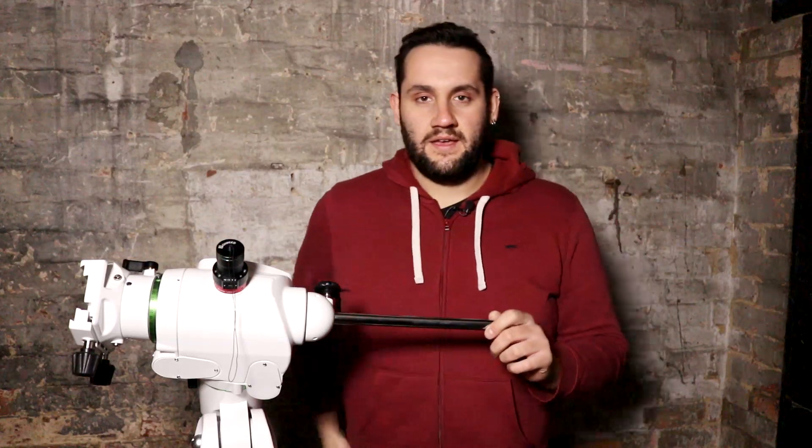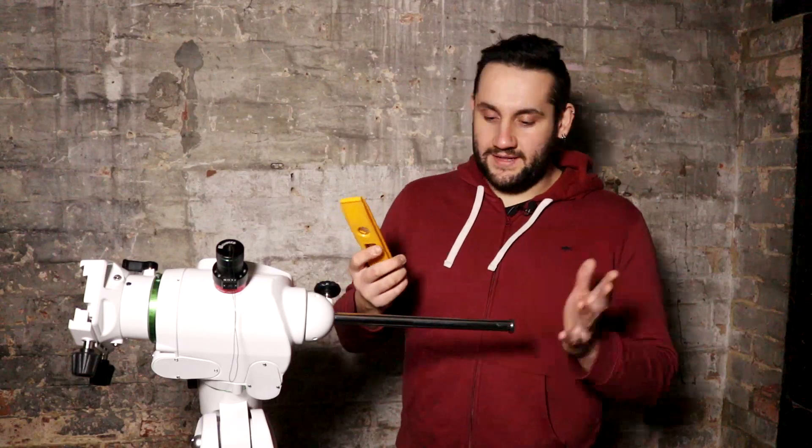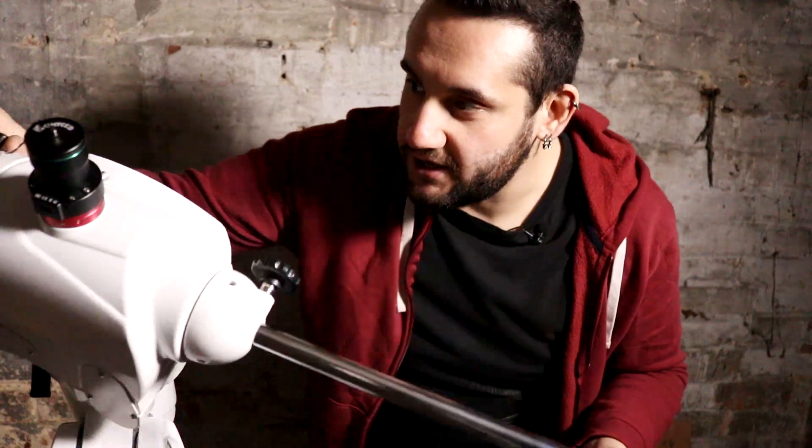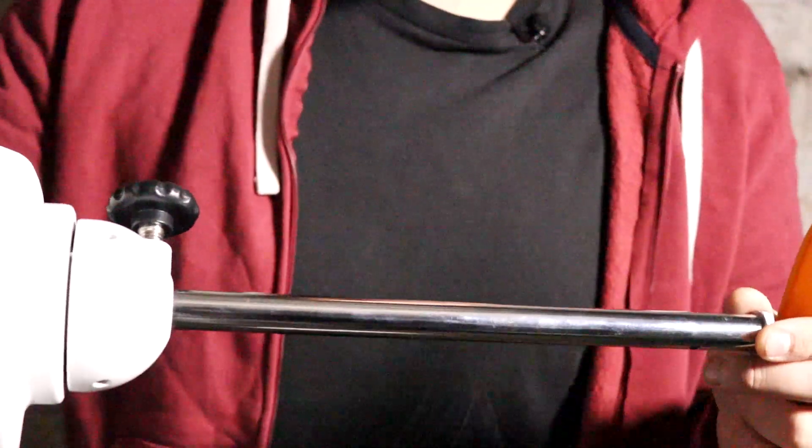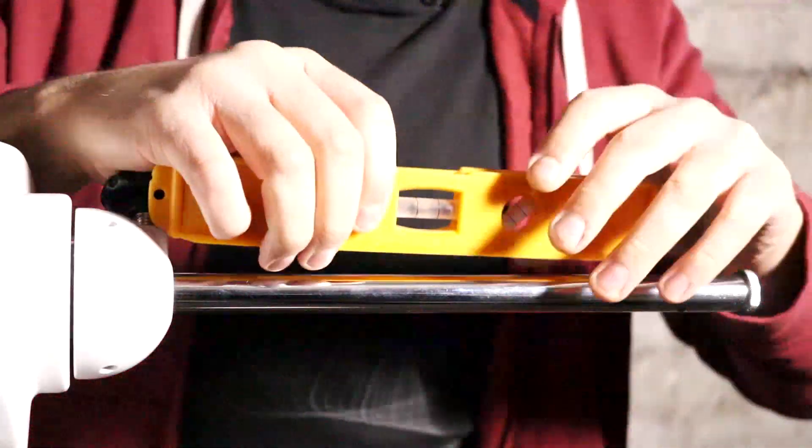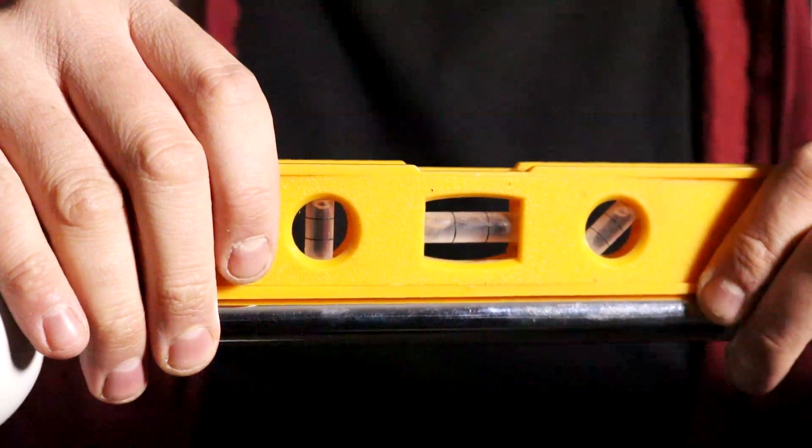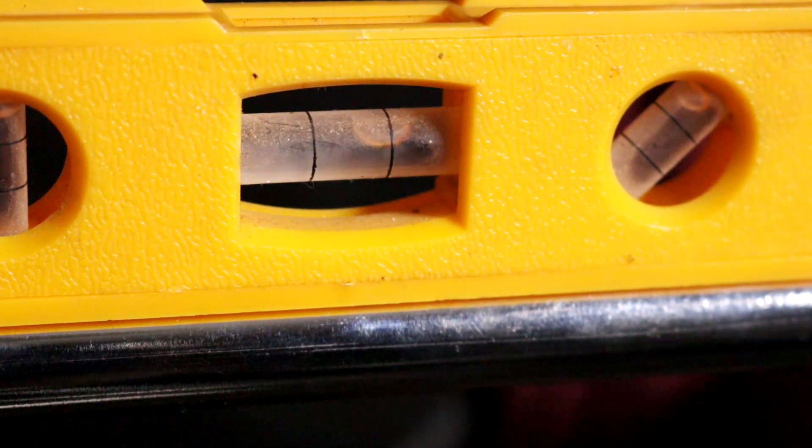So we need to get this accurately to the home position and we're going to start off with the right ascension axis. Make sure you haven't got your counterweight on it and get your spirit level. With the right ascension axis undone, we need to move this until it's horizontal. As it's getting to horizontal, get your spirit level onto the counterweight bar and move it in right ascension until the spirit level reads level.